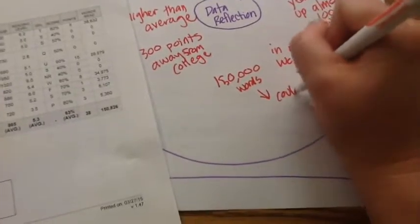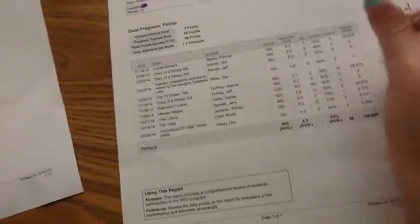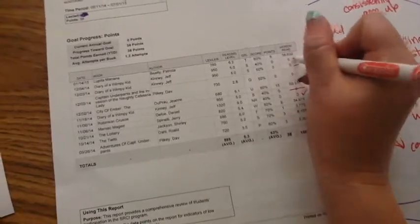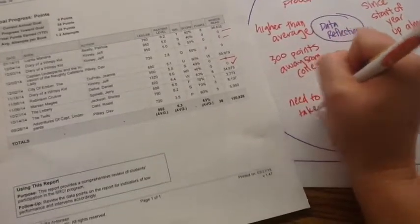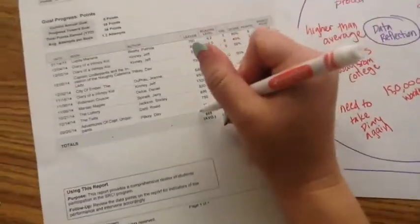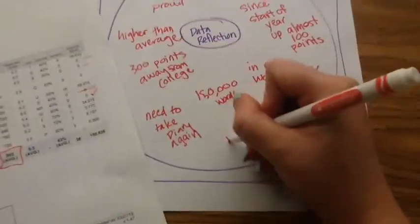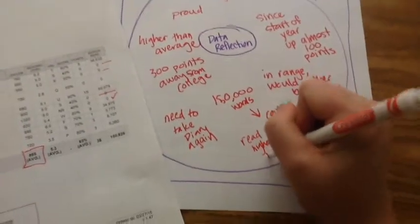But I think I could do better. I also see, in terms of the quizzes that I've taken, I haven't passed a couple of quizzes. For example, I see that I got no points for Robinson Crusoe, and I didn't get any points for Diary of a Wimpy Kid. But I've taken it three times. So I'm going to put, I need to take Diary of a Wimpy Kid again. I also see that the average lexile of the books that I've been reading, 865, is a little bit lower than my lexile. I probably should be reading higher books. So I'm going to put read higher books.